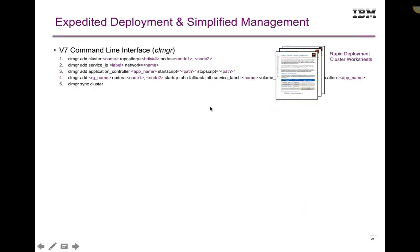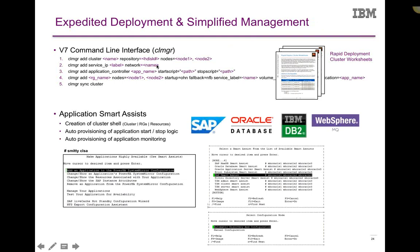The command-line interface was significantly enhanced starting in any of the version 7 releases. I put together some rapid deploy cluster worksheets — kind of a cheat sheet if you want to do a very fast deploy without going through the SMIT panels. If you install the code, have your resources already shared, and just want to create the cluster shell, it's about five commands and you can be up and going. It's page 7 inside that document — just a one-pager showing how to get up and running quickly.